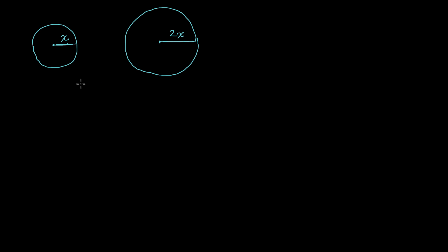So let's just think about what the circumference of both of these are and what the areas of both of these are. So the circumference of any circle is 2π times the radius. So in this case the circumference, and I'll use C for circumference, is equal to 2π times the radius, which in this case is x.